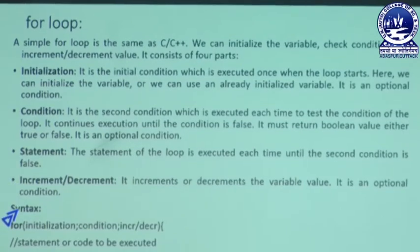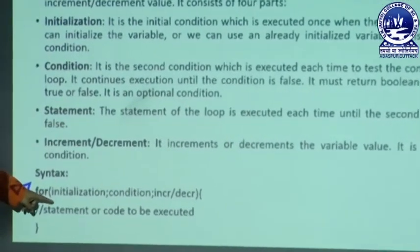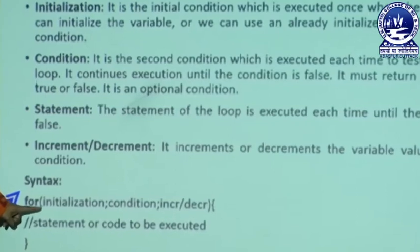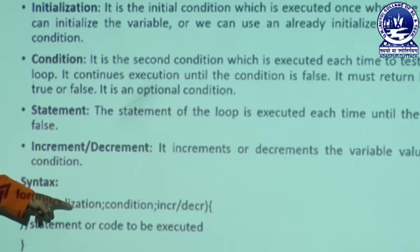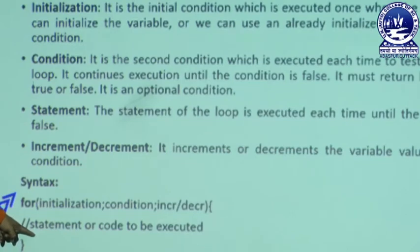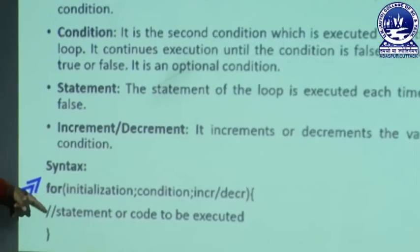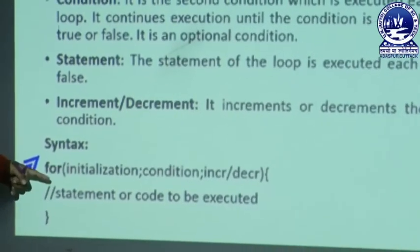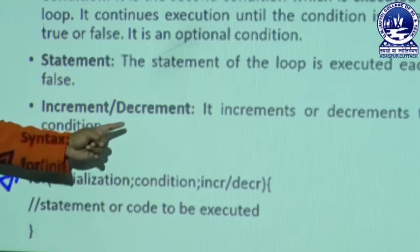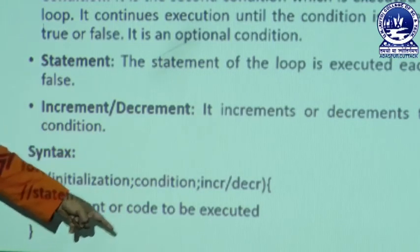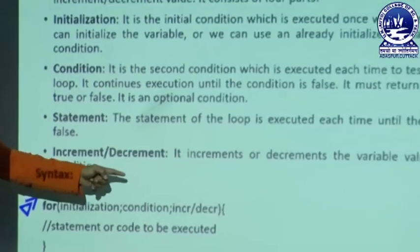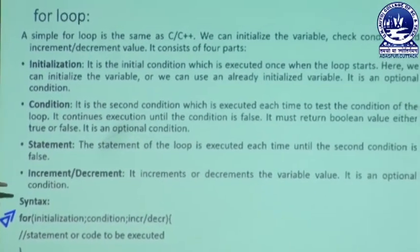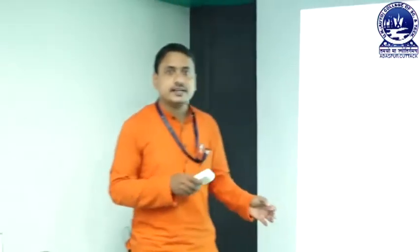Let us focus on the syntax. In the for-loop, first the initialization section is executed only once. Once initialization executes, we move to the condition section. When the condition executes, we move to the increment or decrement section, then back to condition, then statement. The flow is: condition check, statement, increment or decrement — repeated more than once depending on the condition variable. If the condition is false, the loop structure breaks and we come out of the for-loop.